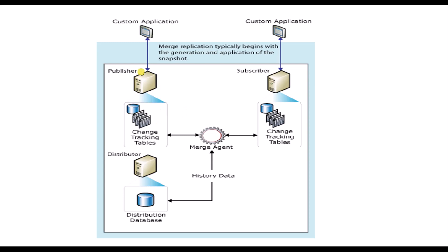Here is how the flow works: the publisher database and subscriber database are connected via the merge agent. It takes changes from the change tracking tables and records them into the distribution database. From the distribution database, the changes are then given to the subscriber.